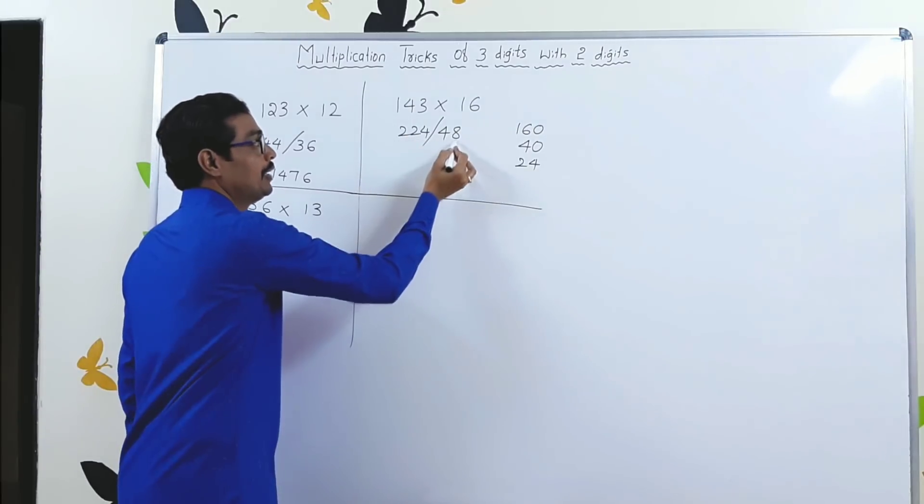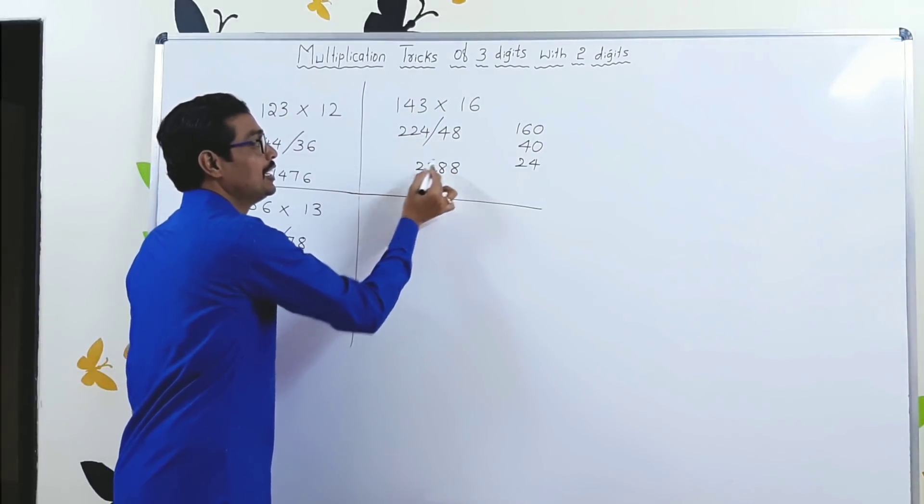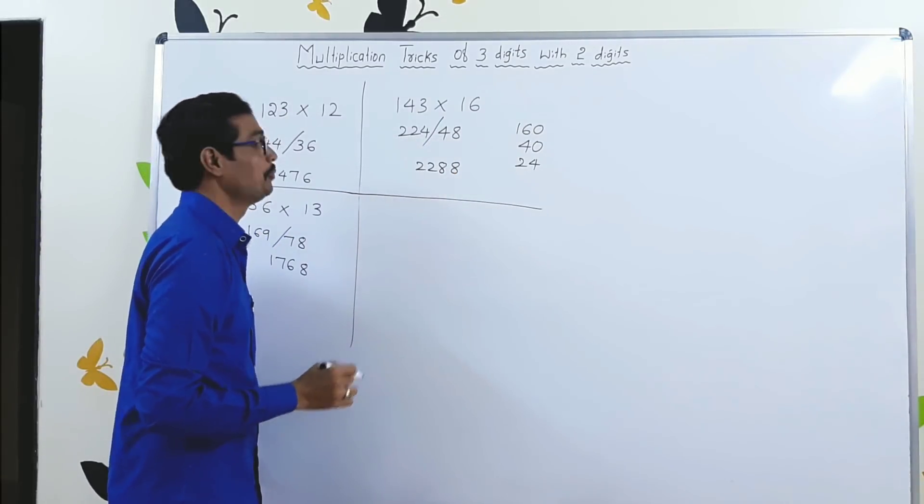Perfect. Write the unit digit. 224 plus 4, definitely 228. Next.